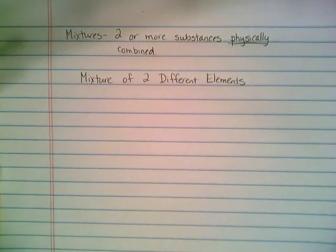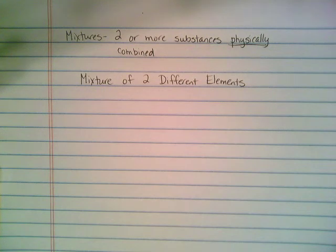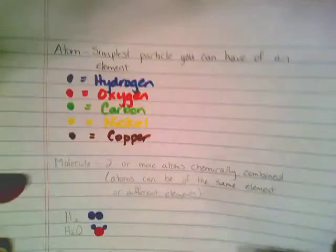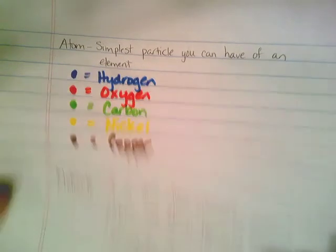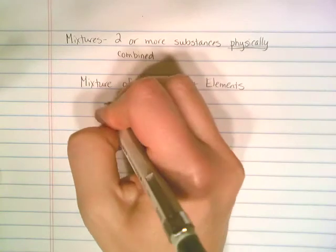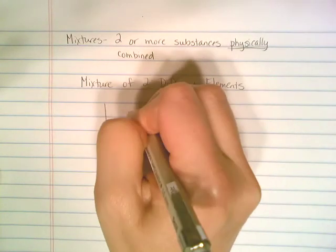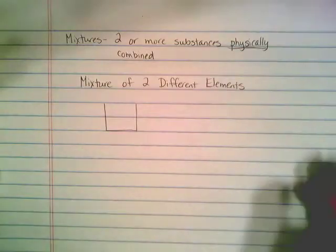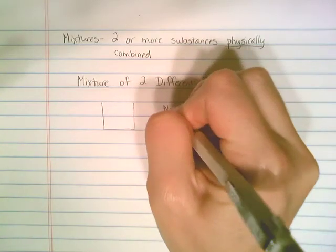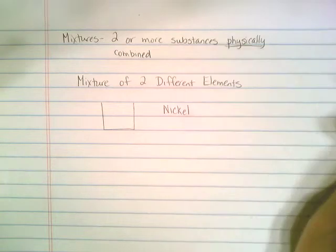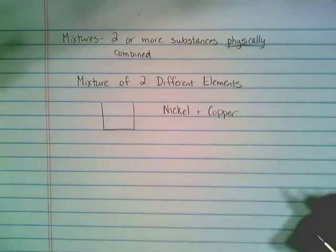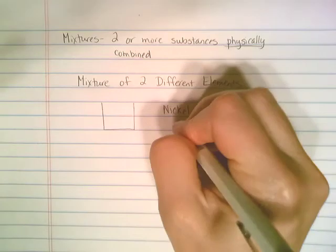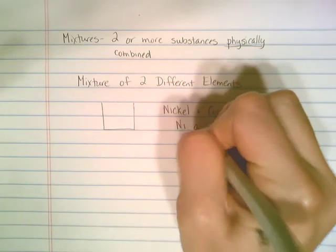So let's say we have the element nickel and the element copper. We decided previously to make nickel yellow and copper brown. So what if we had a cup, for example, and in that cup were some nickels and some pennies, which on the outside have that copper coating, so nickel and copper.